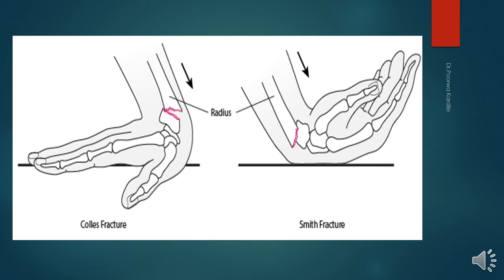Treatment involves a splint or cast, and regular X-rays are taken to monitor the healing process. The patient presents with pain, tenderness, swelling, and bruising when attempting to flex the wrist. The extensor pollicis longus tendon may also rupture, and a late complication is wrist stiffness.